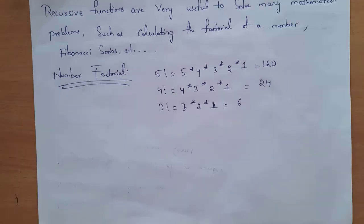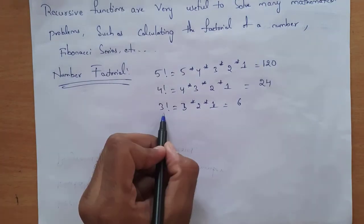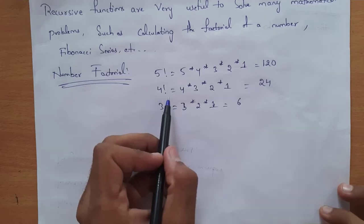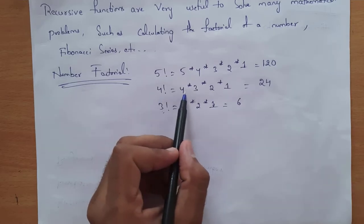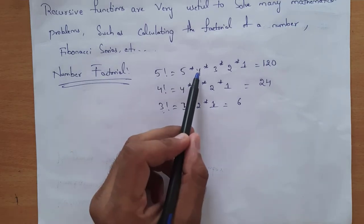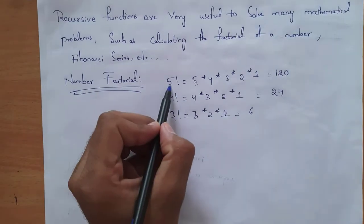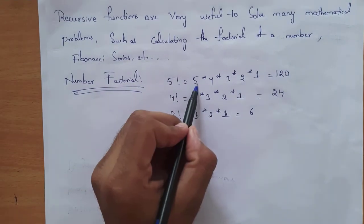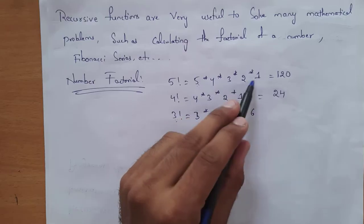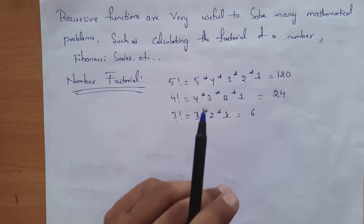First I will explain the program to calculate factorial of a number using recursion. Before that, you need to know how to find factorial of a number. For example, 3 factorial is 3×2×1 = 6, 4 factorial is 4×3×2×1 = 24, and 5 factorial is 5×4×3×2×1. We start from that number and keep multiplying by decrementing each value until one.